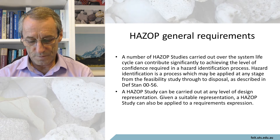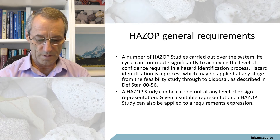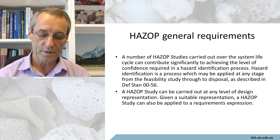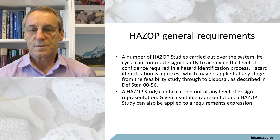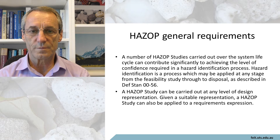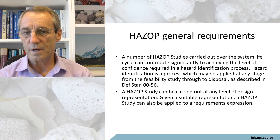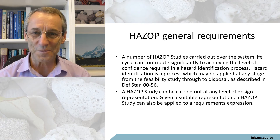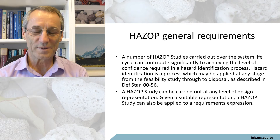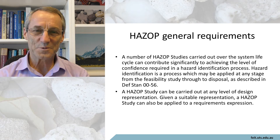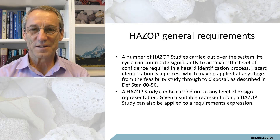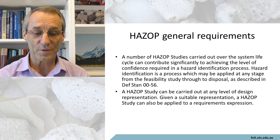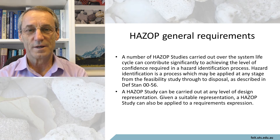The general requirements of a HAZOP study: a number of HAZOP studies carried out over the system lifecycle can contribute significantly to achieving the level of confidence required in a hazard identification process. If you have a chemical refinery, it's going to be there for decades and you want to be assured it's not going to blow up. Similarly, for any life-critical system, you really want to check: can this thing go wrong? That's what it's all about. It's not concerned about whether it can go right — we assume it can. This review method is concerned with whether it can go wrong.